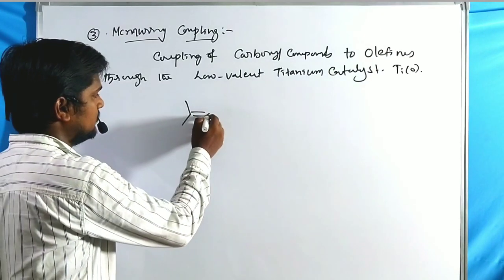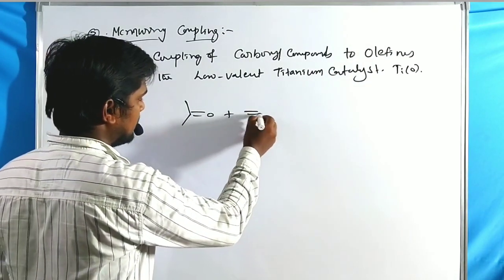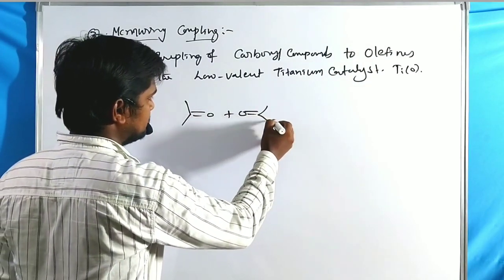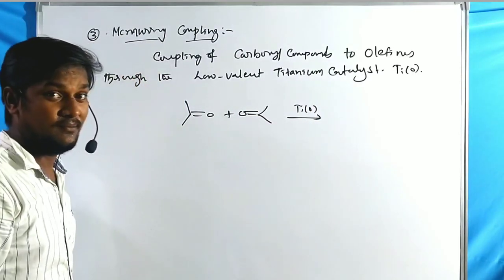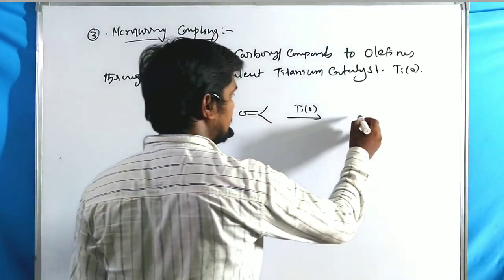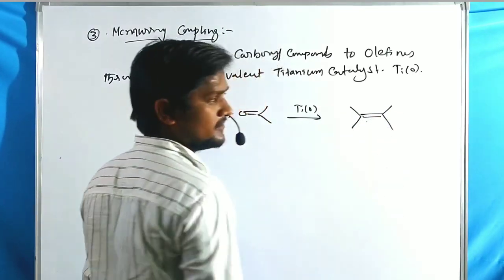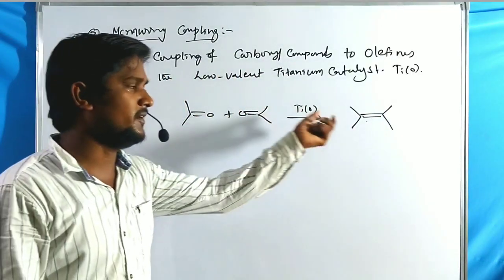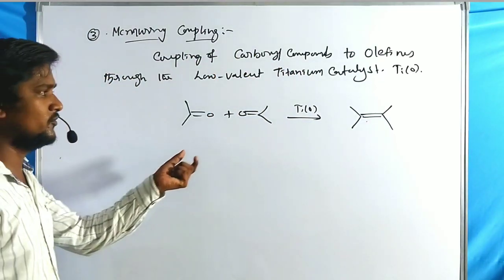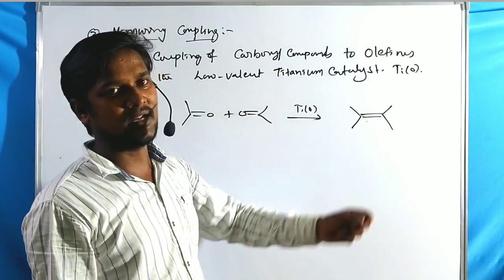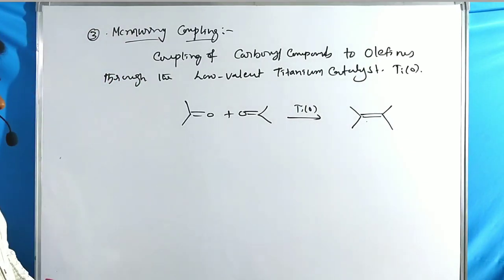Generally, two moles of carbonyl compounds are taken in the presence of a titanium zero catalyst. The carbonyls are converted to olefins through the titanium zero catalyst — that is McMurray Coupling.